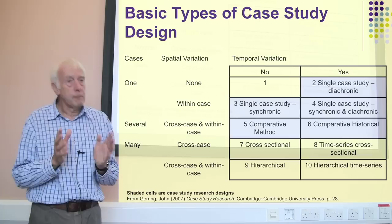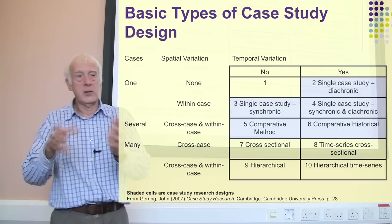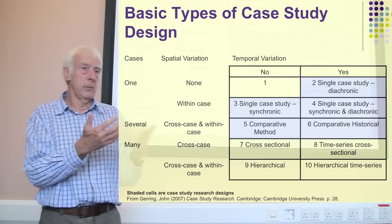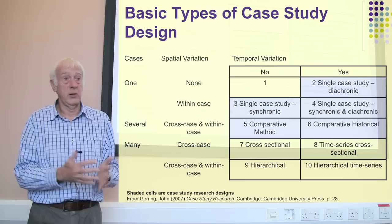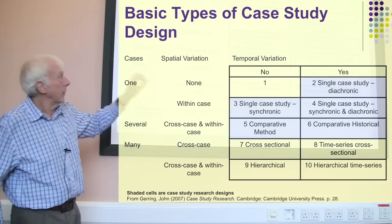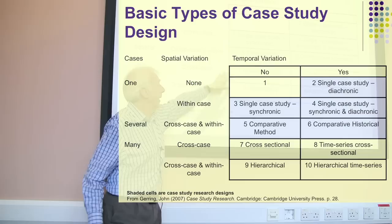It's almost impossible not to include time in some sense with a case study, but some will be focusing particularly on how things change. For example, studying change in an organization where you have a system beforehand and the system after — you're definitely looking at change across time. In other cases you might not be so interested in that, such as how a housing or urban regeneration procedure works or not. The table indicates ten possibilities, of which the grayed-out boxes are the keynote areas for case studies.